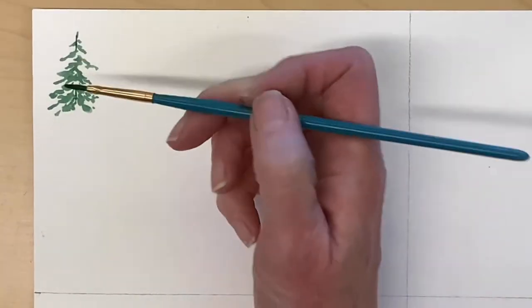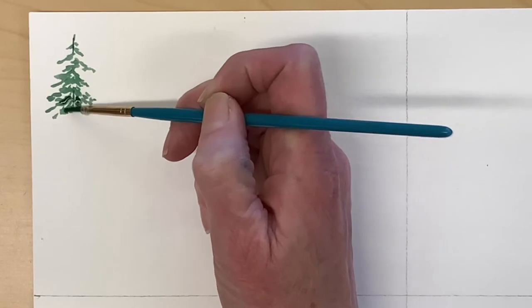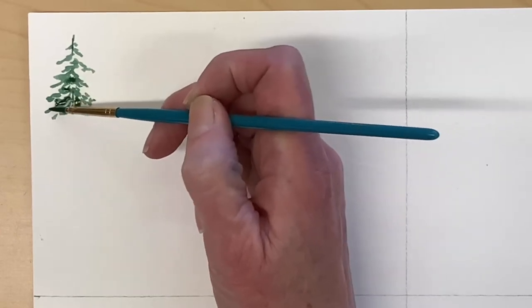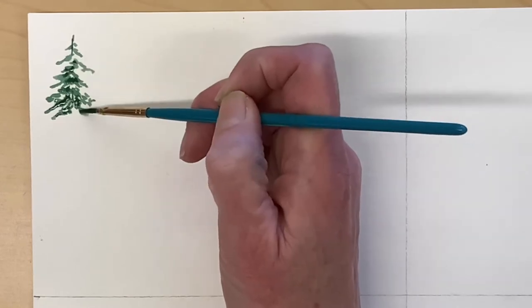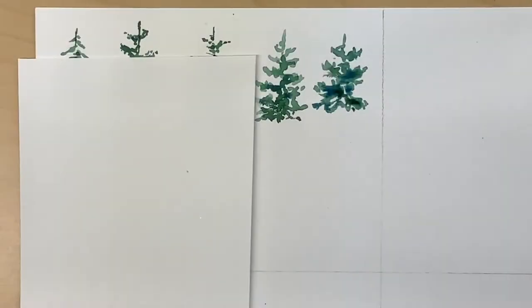Next, I'll pick up some darker paint and drop it in, and I'm trying to do this while that first layer is still wet. This will give it some volume and add some shadow areas.